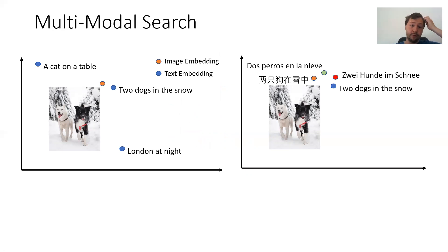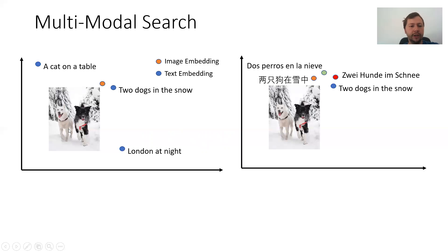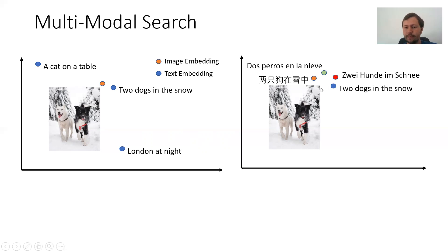These methods are also quite interesting for multimodal search. You cannot only map text into vector spaces, but also images, tables, programming code, and videos — there's no limit on which modality you're working on. You encode your images in the vector space, then enter a text query like 'two dogs in the snow', find which image embedding is close to your text embedding, and get a matching image. This works across different languages — whether you enter 'two dogs in the snow' in English, German, or Spanish, they all map to the same region in the vector space, close to the image of two dogs playing in the snow.